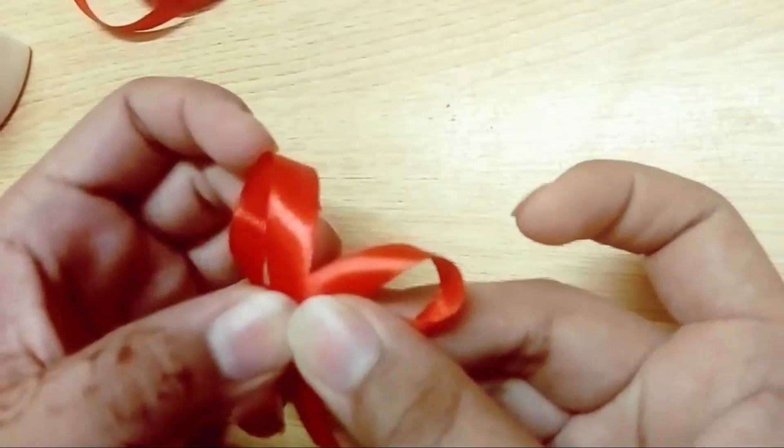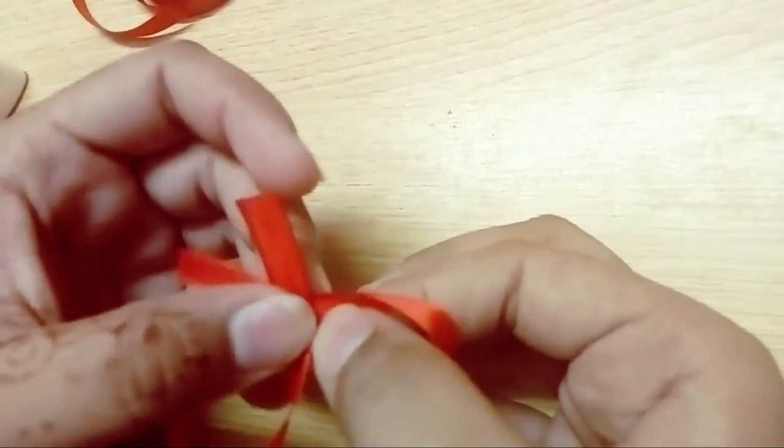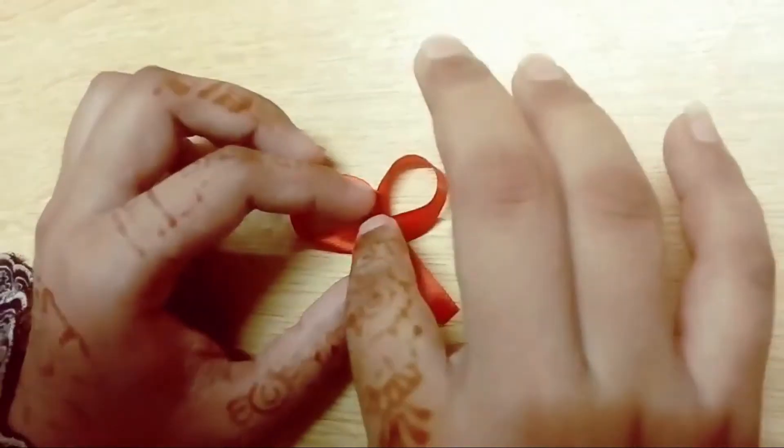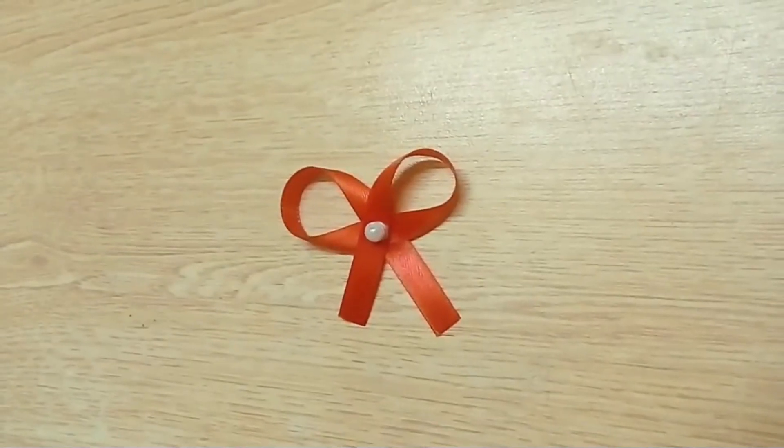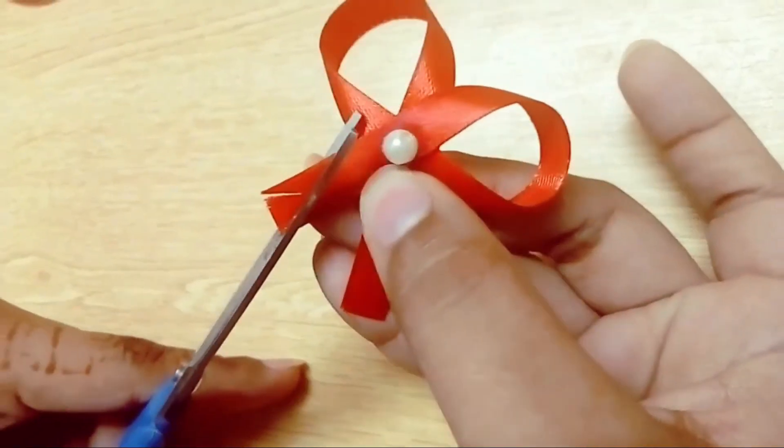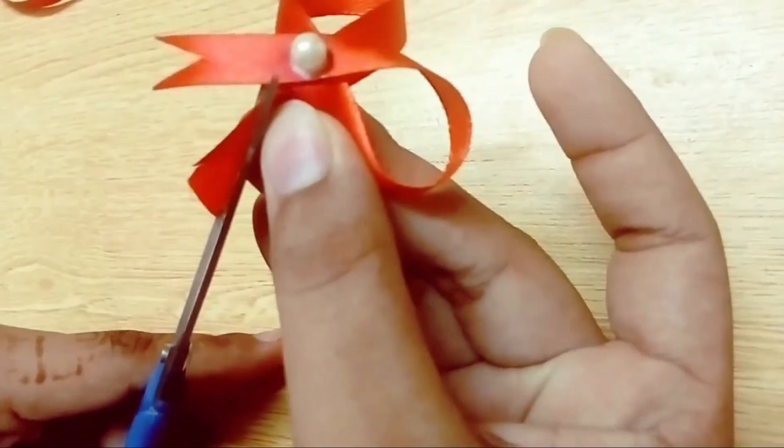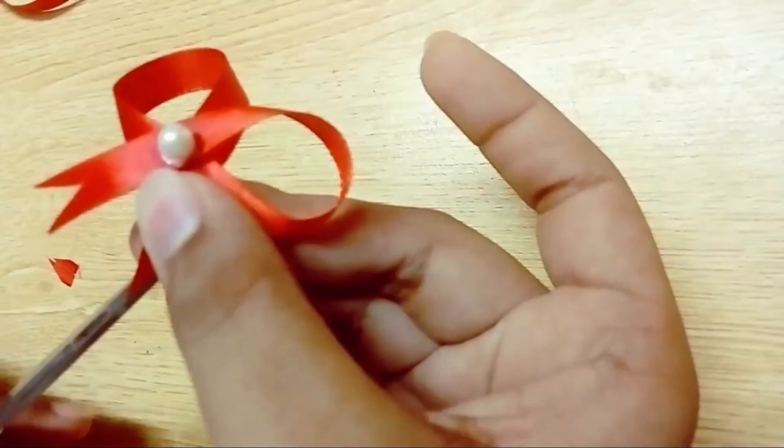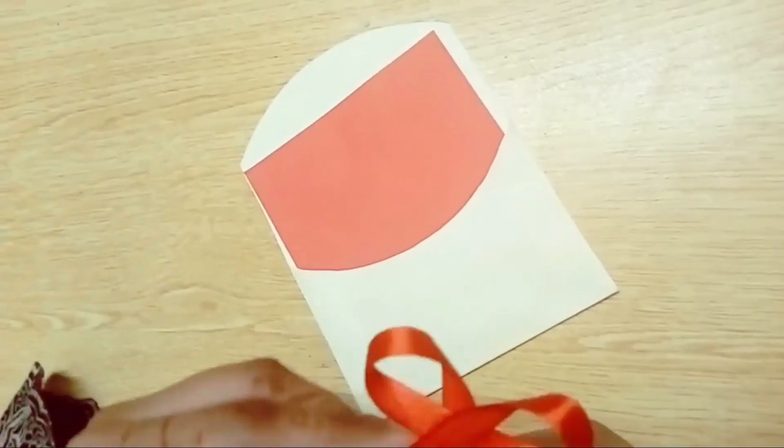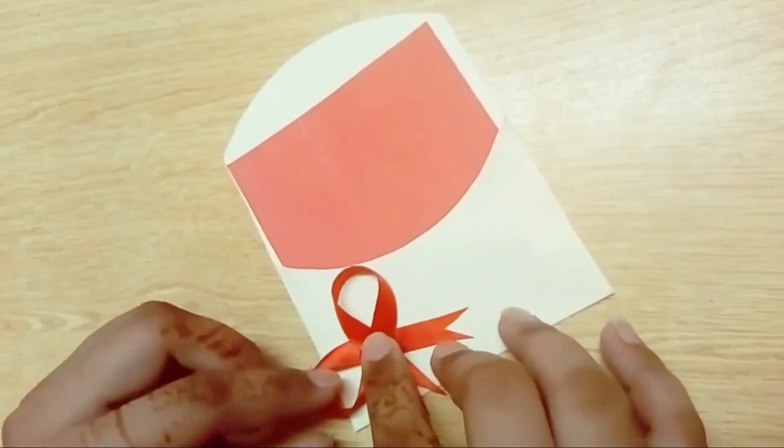Use white glue to make the bow and to stick the white pearl with it. Now use the hot glue gun to make this bow a part of your envelope.